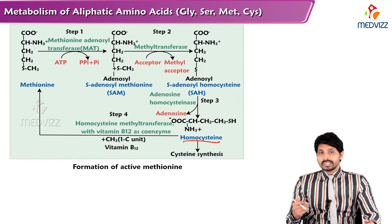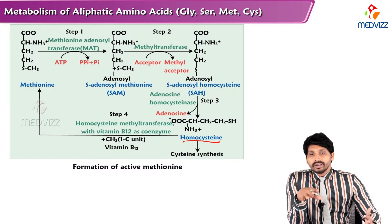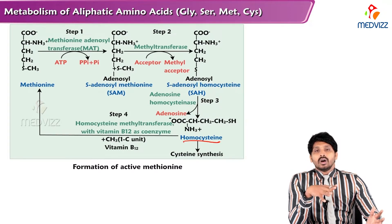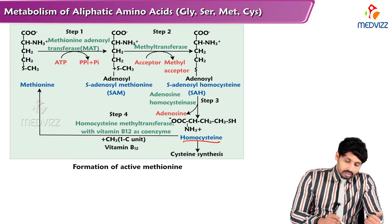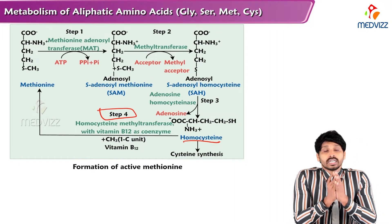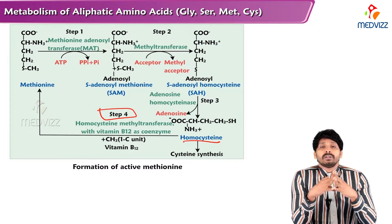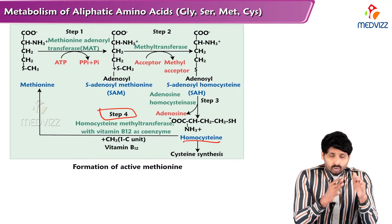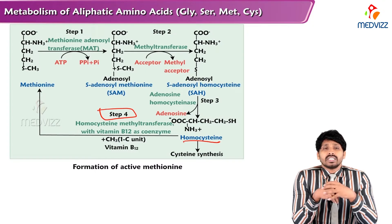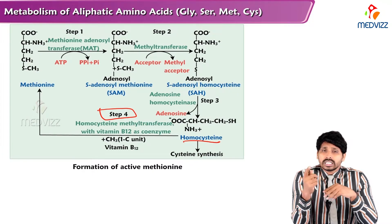This homocysteine is involved in the making of Cysteine, and it can also be converted back to Methionine — meaning Methionine can be regenerated once catabolism begins. In step 4, homocysteine is converted to Methionine, which requires a methyl donor: methylcobalamin, the coenzyme of vitamin B12. Methylcobalamin donates its methyl group to homocysteine, converting it back to Methionine. If there is a vitamin B12 deficiency, you cannot make Methionine — this leads to a disease condition to be discussed subsequently.